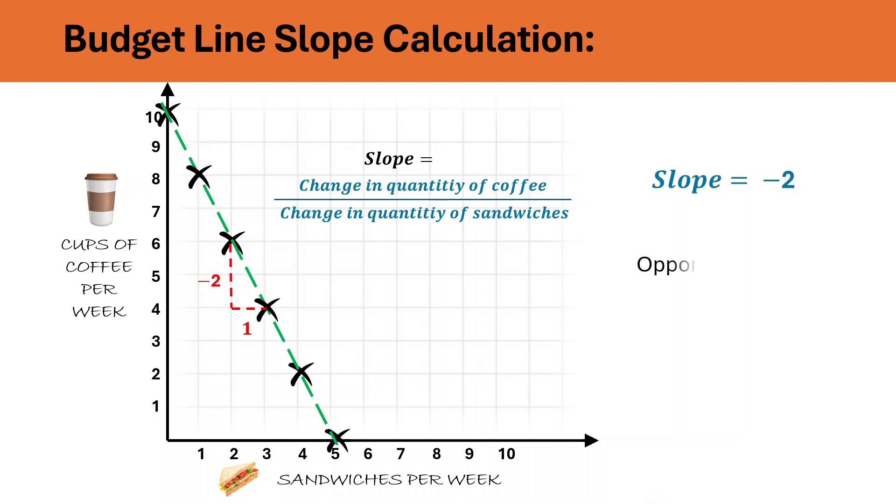This reflects the opportunity cost or the marginal rate of exchange. This minus sign also has relevance as this is reflecting that the slope is negative and in order to gain one sandwich, one more sandwich, you have to let go some coffee.